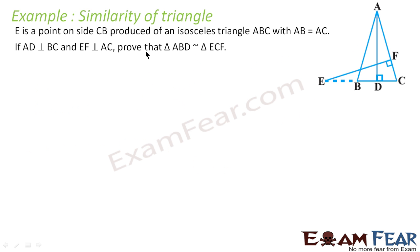Let's take one more problem. The question says E is a point on side CB produced of an isosceles triangle ABC, with AB equal to AC. AD is perpendicular to BC and EF is perpendicular to AC. We have to prove that triangle ABD is similar to triangle EFC.